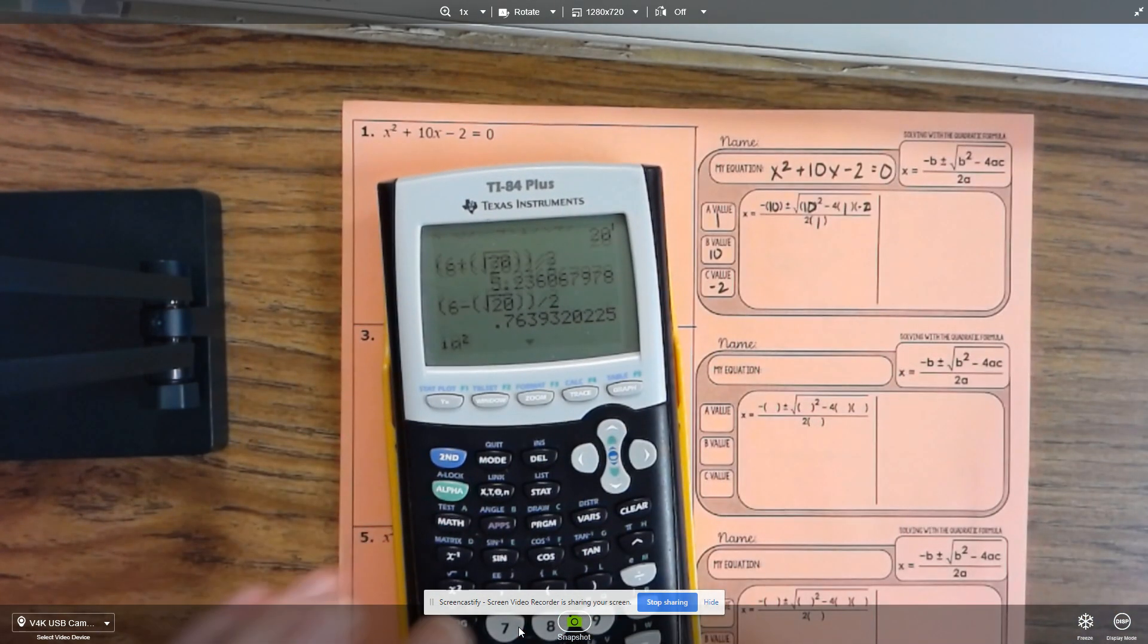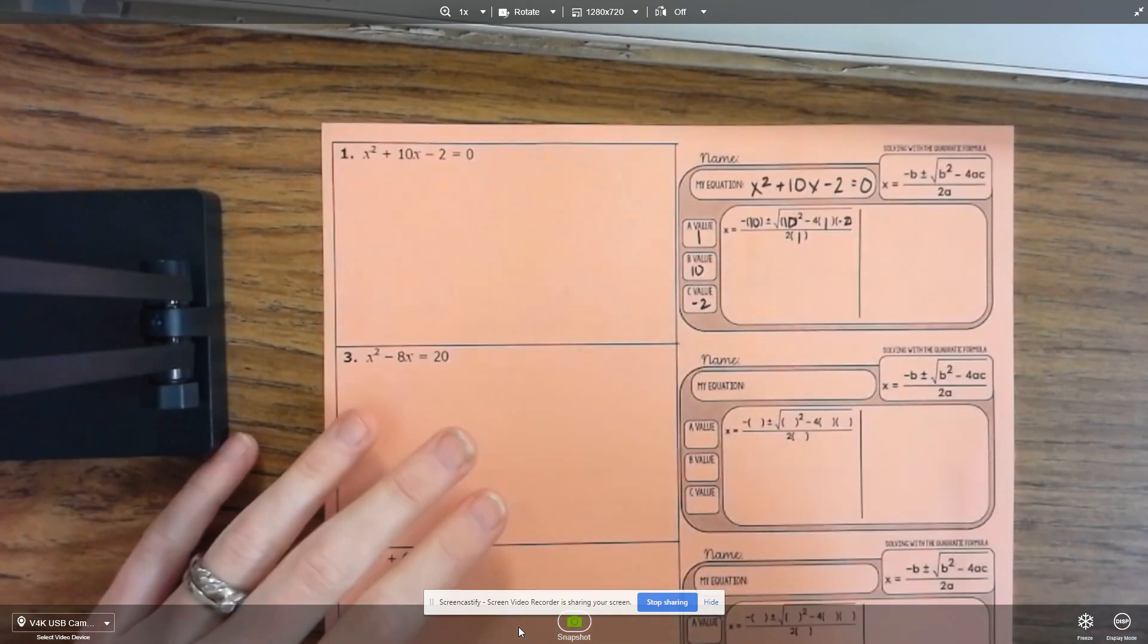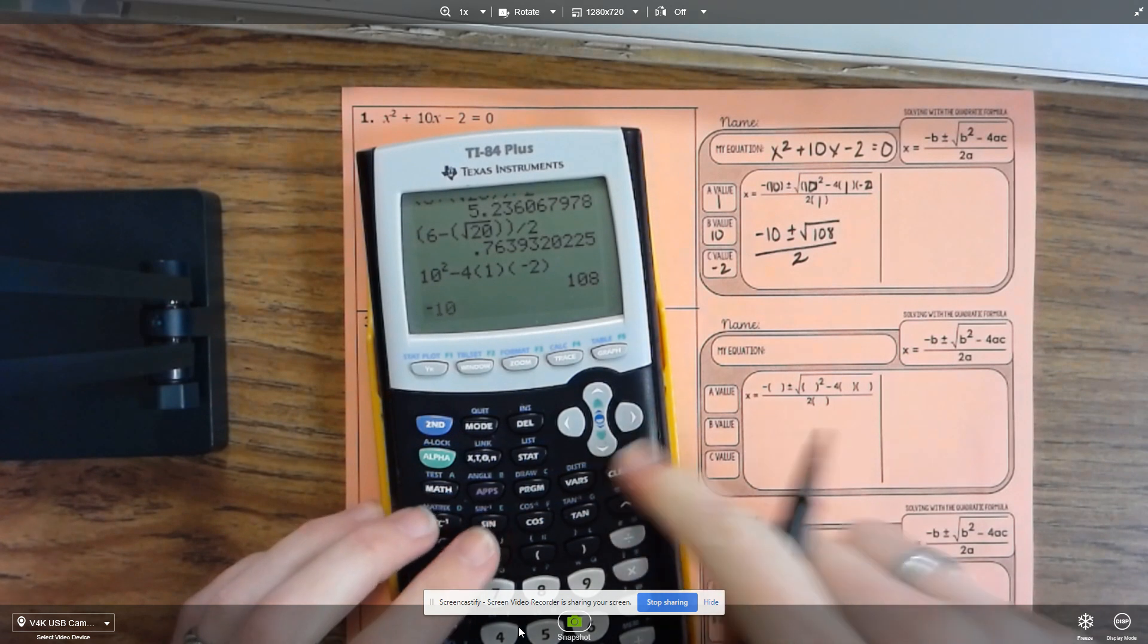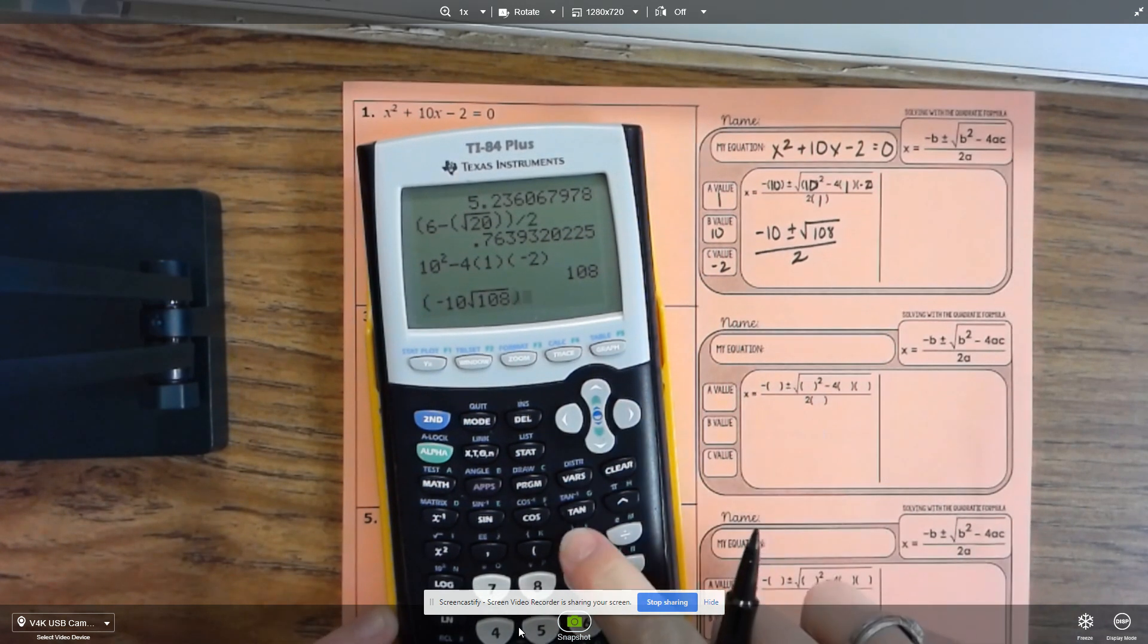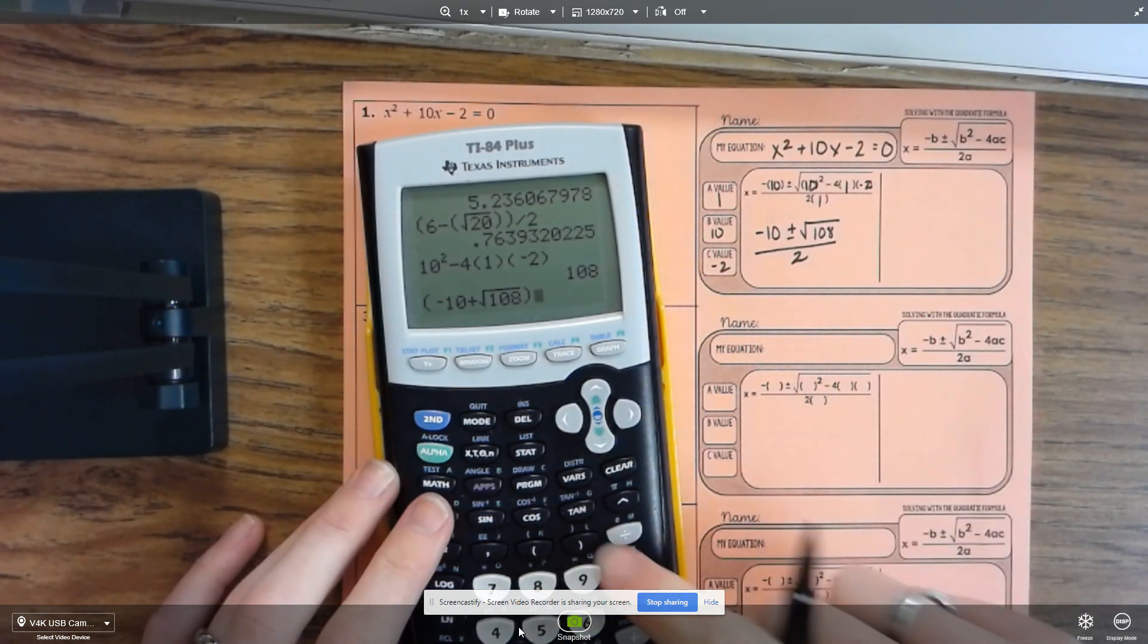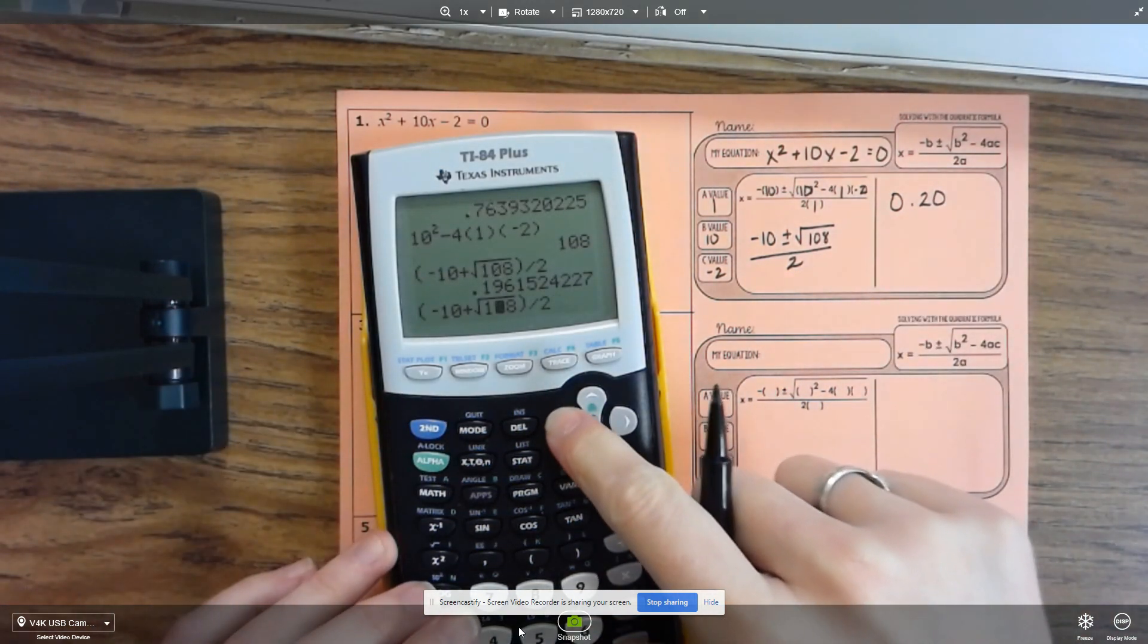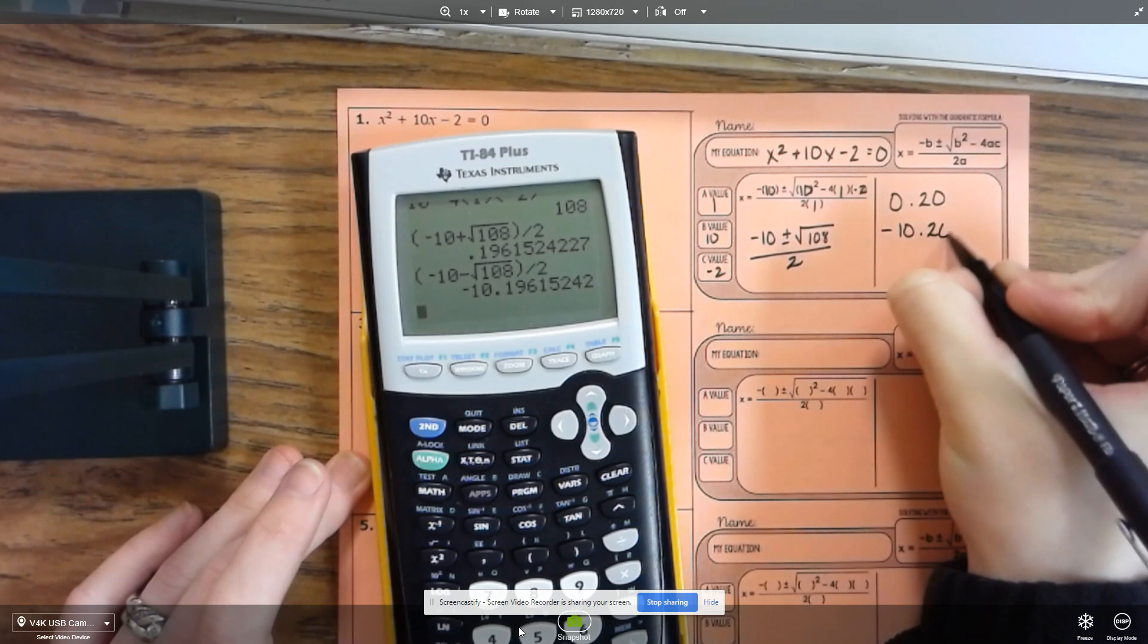Again, you can do what's inside or under that radical first. And so we've got here negative 10 plus or minus the square root of 108 divided by 2. And then you can work that twice. Once with a plus, so this one is 0.20 if I round. And then the second time, you can go back and do it and subtract, and you get a negative 10.20.